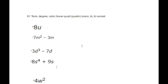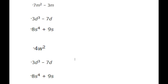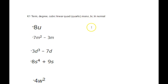Now let's talk about monomial, binomial, and trinomial. A monomial means there's one term. A binomial means there are two terms. A trinomial means there are three terms — three groups of variables and numbers added or subtracted together. Polynomial covers all of these, and you can have larger polynomials with more than three terms, but you don't need to know the names of those.